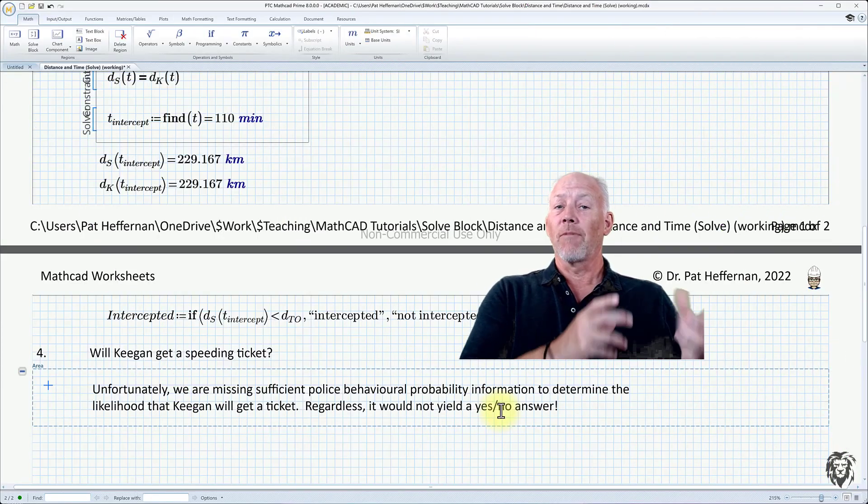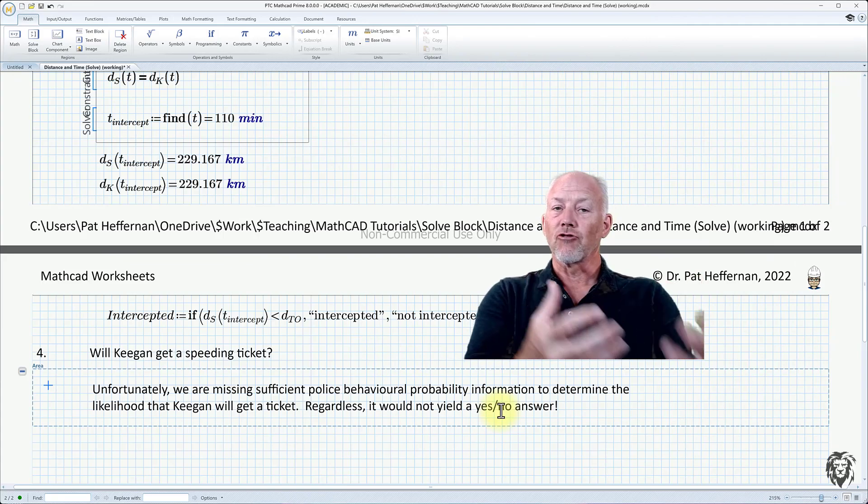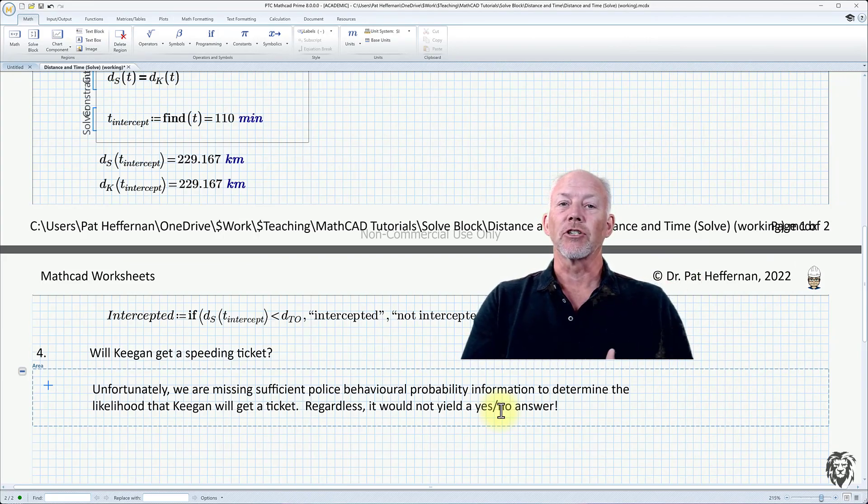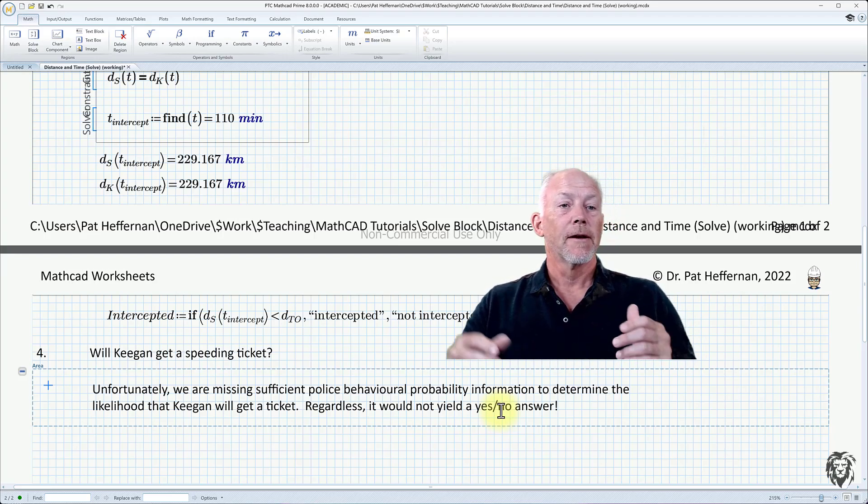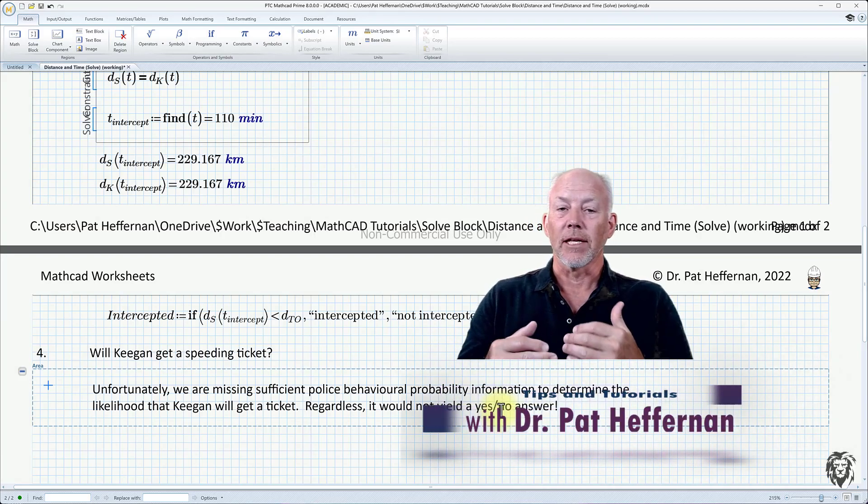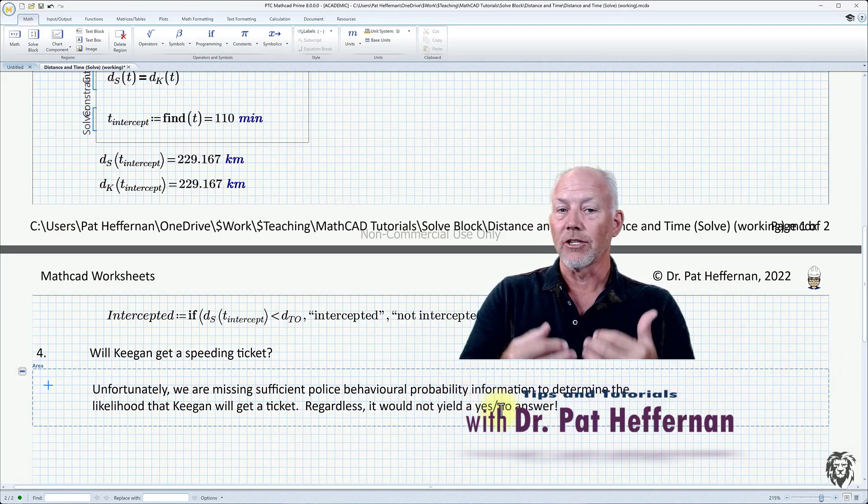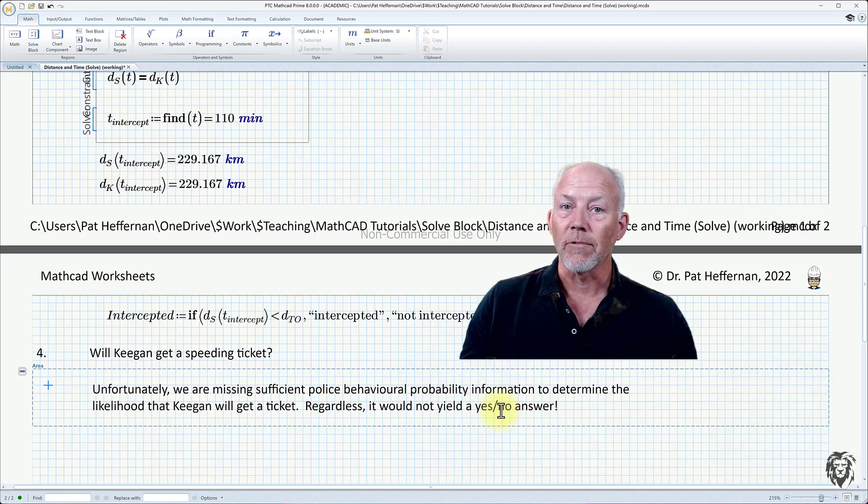So anyway, that's the solve block. It's a fairly simple example, fairly straightforward, a single constraint equation drawing information from two other functions which were predefined before the solve block was entered. But you can see its usefulness. We will add some more, add to more complex examples of the solve blocks so that you can find something that's kind of close to the challenge you're facing and trying to figure out how to use it. So hopefully that was useful and we'll see you on the next run.